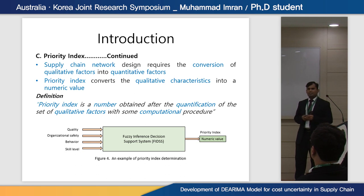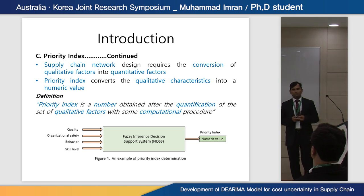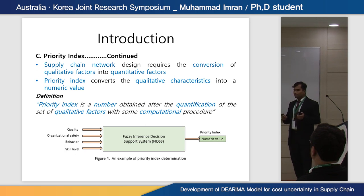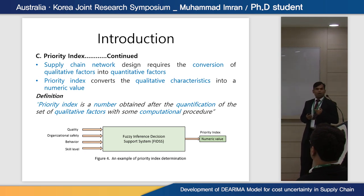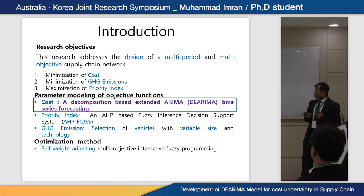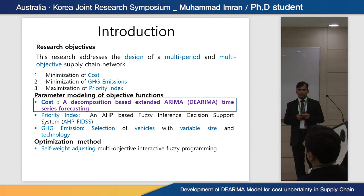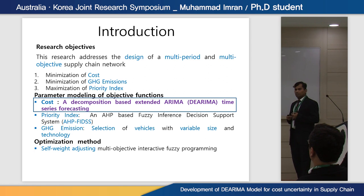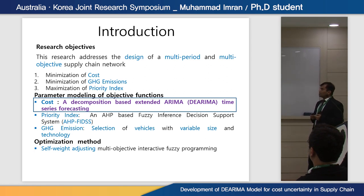The priority index is a number obtained after quantification of a set of qualitative factors using computational procedures. For example, quality, organizational safety, behavior, and skill level can be converted to a numeric value called the priority index. This research addresses the design of a multi-period, multi-objective supply chain network with objectives of minimization of cost, minimization of greenhouse gas emission, and maximization of priority index.